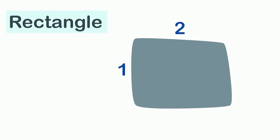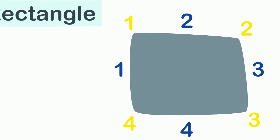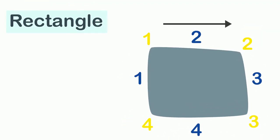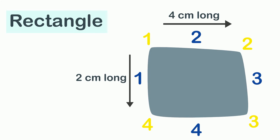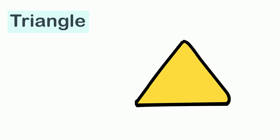This is a rectangle. Similar to a square, a rectangle also has four sides — one, two, three, and four — and four corners — one, two, three, and four. However, unlike a square, not all four sides of a rectangle are equal. Instead, only the opposite sides are of equal size. For instance, these two sides are four centimeters long and these two sides are two centimeters long.